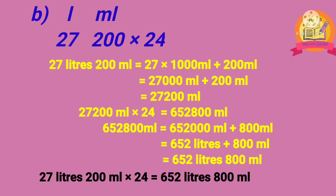Problem B: 27 liters 200 ml multiplied by 24. Before multiplying, convert 27 liters 200 ml into ml. By converting, we get 27,200 ml. After multiplying 27,200 ml by 24, we get 652,800 ml. By converting 652,800 ml into liters, we get 652 liters 800 ml. Therefore, 27 liters 200 ml multiplied by 24 is equal to 652 liters 800 ml.